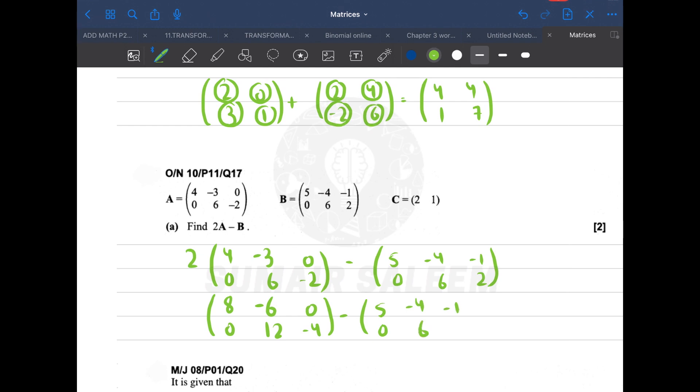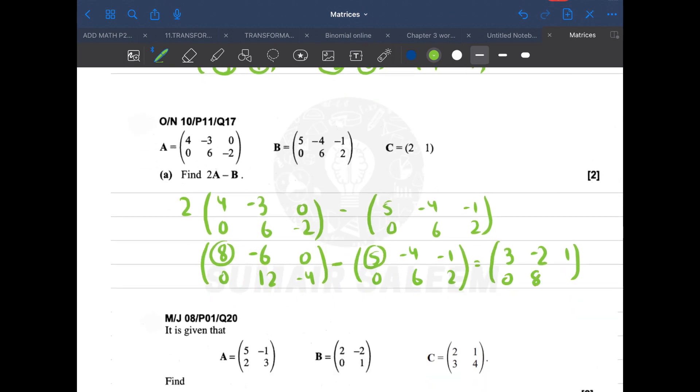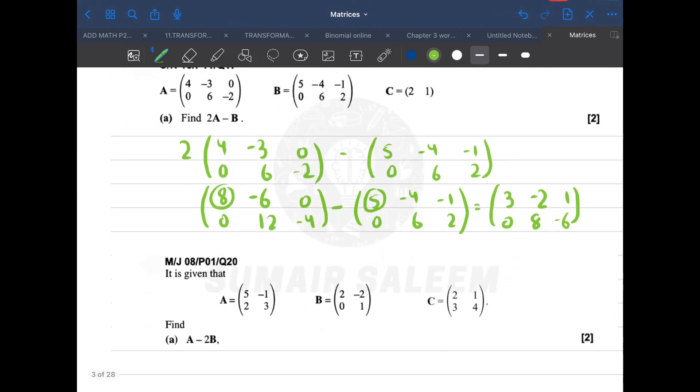Now are the orders of both matrices the same? Yes. I'm going to subtract. 8 minus 5 is 3, 0 minus 0 is 0, -6 minus -4, minus and minus become plus, is -2, 12 minus 6 is 6, 0 minus -1 is 1, -4 minus 2 is -6. What is this?